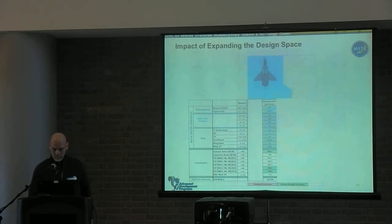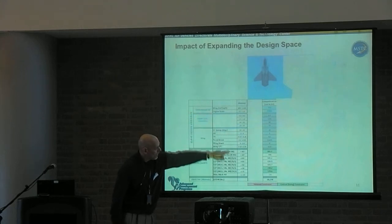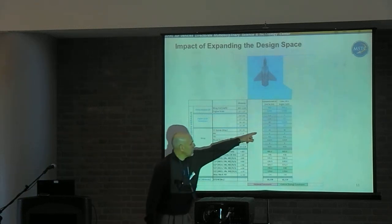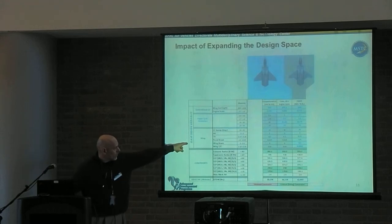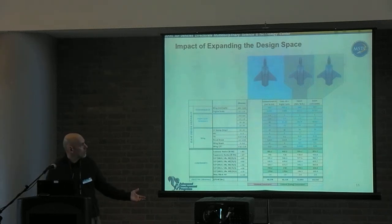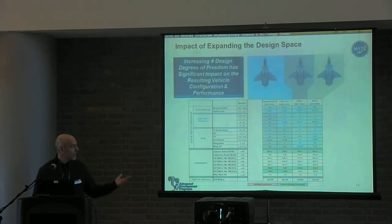Another example is the impact of expanding the design space — expanding the design parameters available. We have engine cycle parameters, wing parameters, and strength. If we just do a conventional conceptual design with three basic parameters, we get a gross takeoff weight of around 68,000 pounds. If we start increasing engine cycle parameters, the weight comes down to 66,000. Further adding wing parameters gets us to about 62,000 pounds. And by adding a couple of technologies, we can get a further reduced weight — showing the impact of physics-based calculations and expanding the design space degrees of freedom on mission performance feasibility.